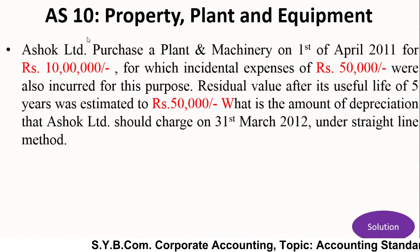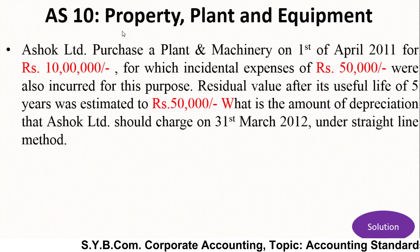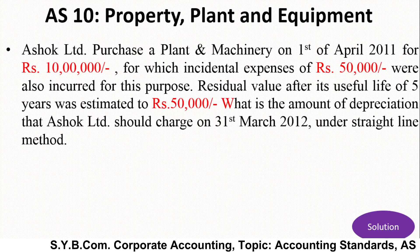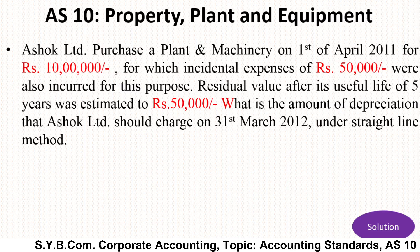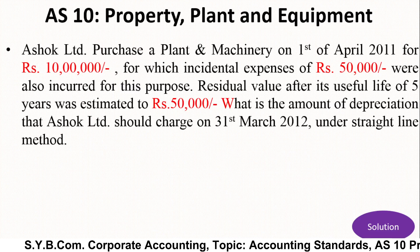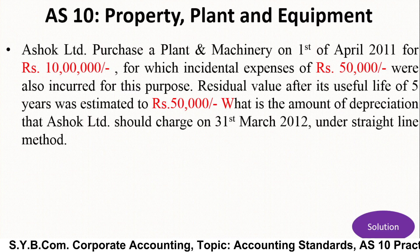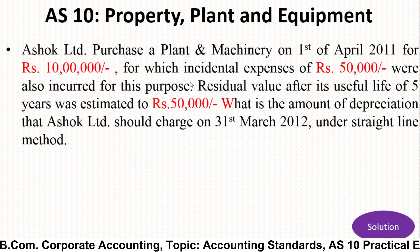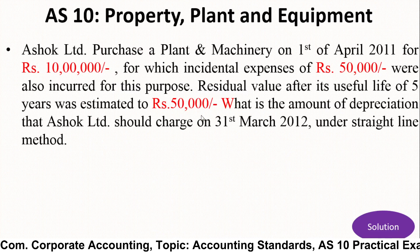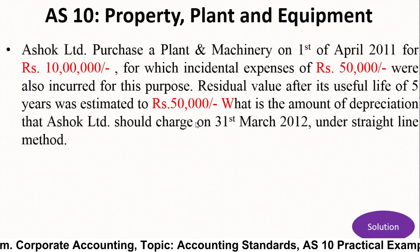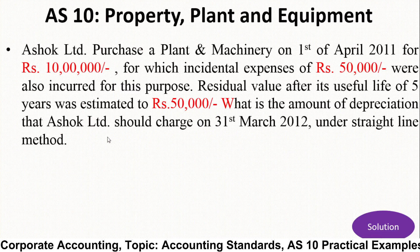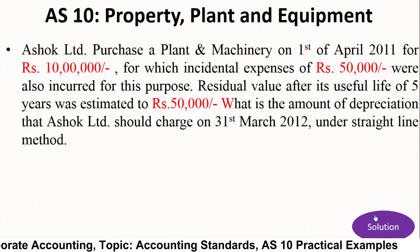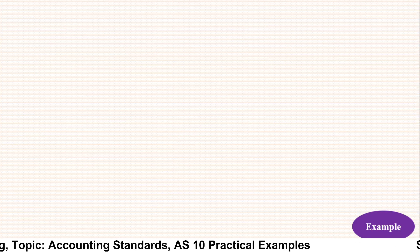We have already seen in Accounting Standard 10 how you can calculate the cost of an asset and how you can charge depreciation as per AS10, that is Property, Plant and Equipment. First of all, you have to add all the incidental expenses — any octroi, transport charges, or other incidental charges — to the cost of the asset. Then you subtract the residual value or scrap value, divided by the estimated number of years of useful life of that asset.